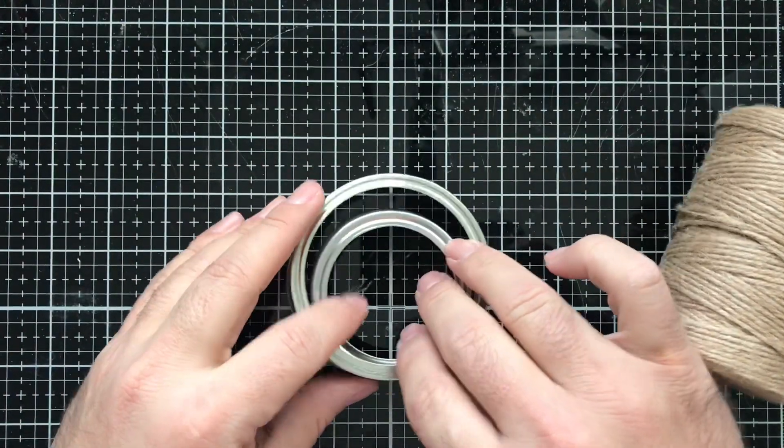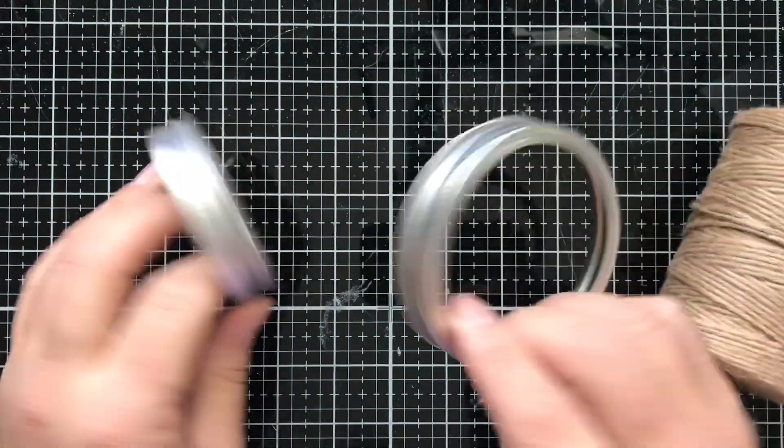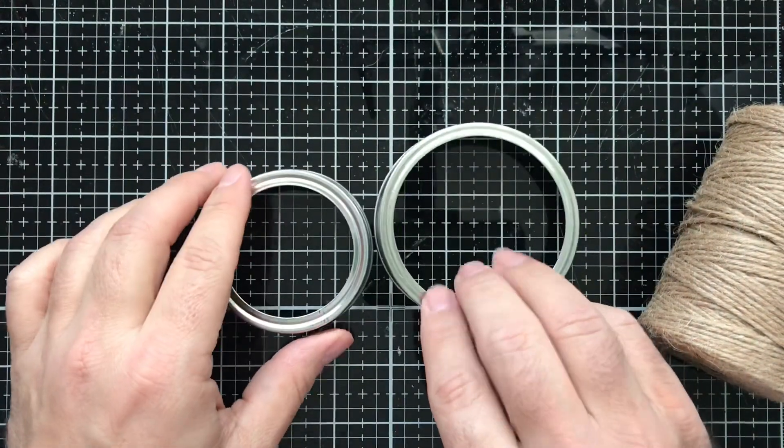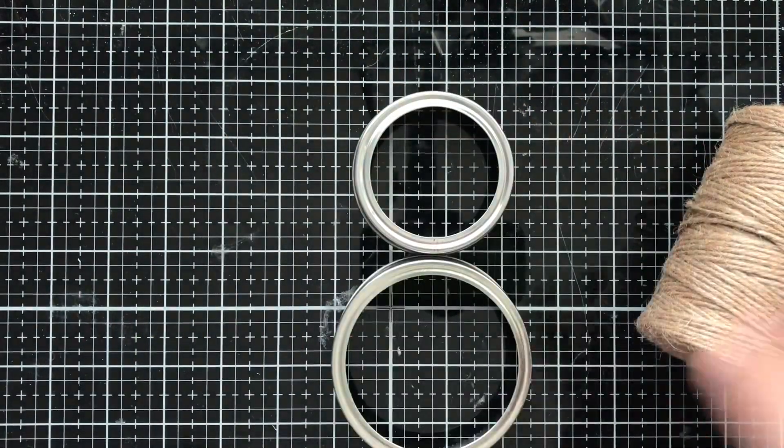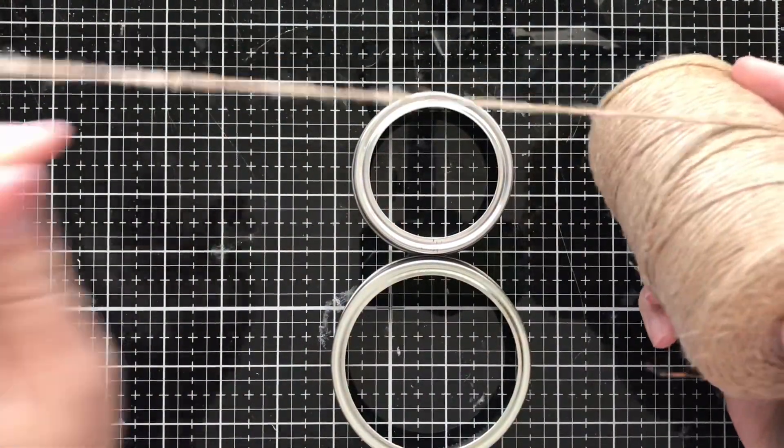So the first thing you're going to need is these mason jar lids - this is the regular size and this is the wide mouth size. So basically that's going to be the little snowman's head and his body, and you're going to need some natural jute.